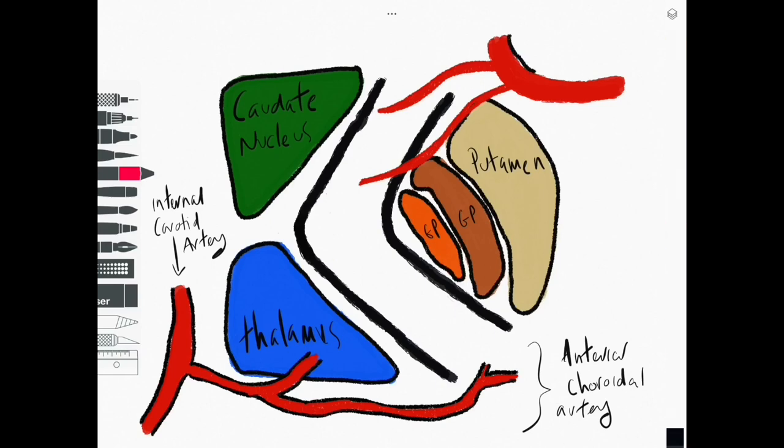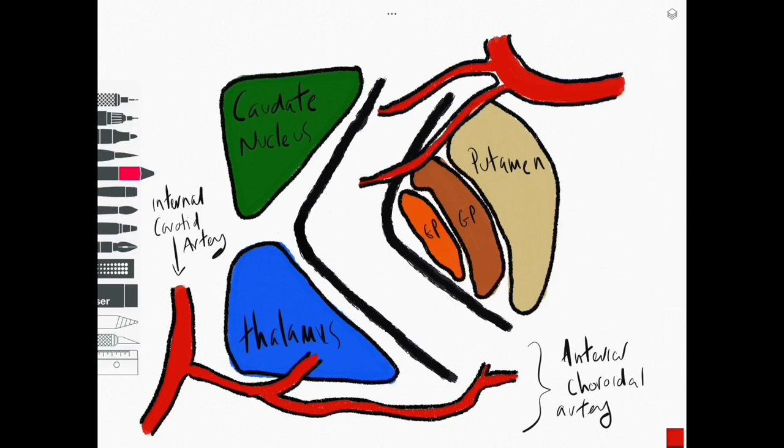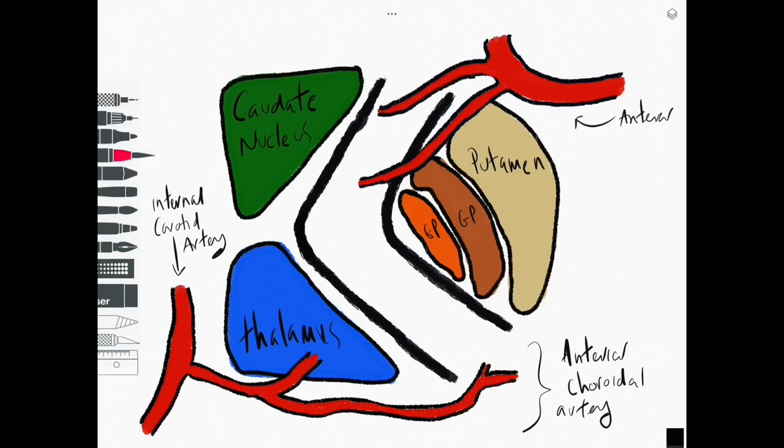Further branches come from the anterior cerebral artery and these go to the anterior limb of the internal capsule supplying those frontopontine fibres and some of the thalamocortical fibres. These branches are called the medial striate arteries.